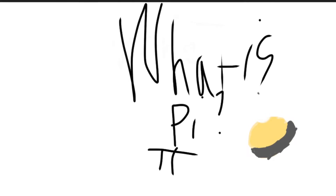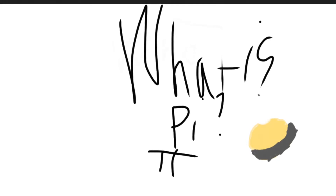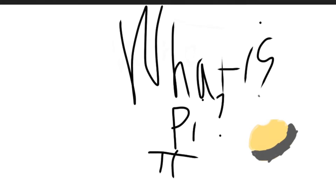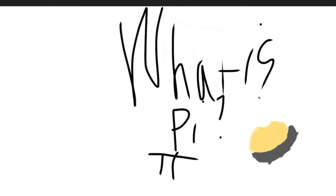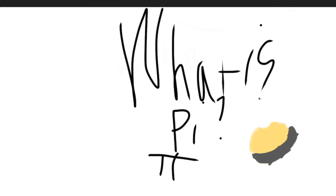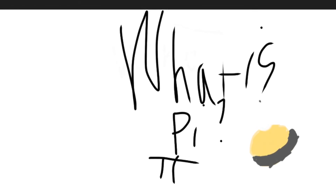Pi is an irrational number, which means it cannot be written as a ratio. It has a non-terminating decimal and goes on forever. So that's basically pi summed up for you.